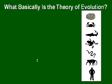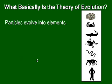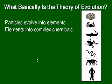Really, when you get down to it, there are really only two explanations for origins. A person who doesn't believe in God has to think of some way we got here, and that's where the theory of evolution came in. Briefly, it's this: particles evolved into elements, elements evolved into chemicals and complex chemicals.